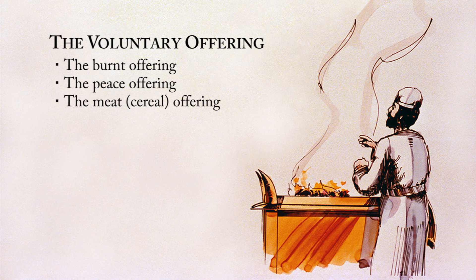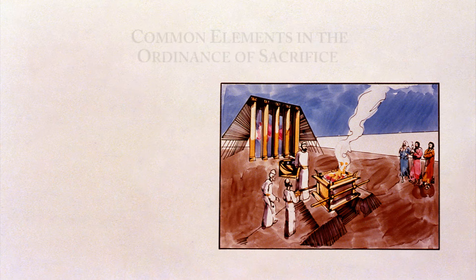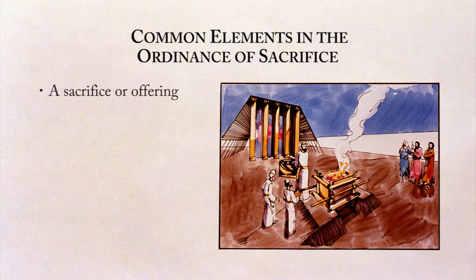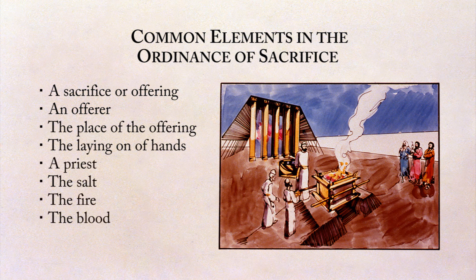the peace offering, and the meat or cereal offering; and two, the obligatory offering, which was the sin offering and the trespass offering. There were essential elements which were common to both categories: a sacrifice or offering, an offerer, the place of the offering, the act of laying on of hands, a priest, the salt, the fire, and the blood. Before examining each of the offerings, it will prove helpful to look at the significance of each element. By doing so, an appreciation of the prophetic spirit which undergirded the law of sacrifice can be developed. This, in turn, will provide a background to understanding the offerings themselves.